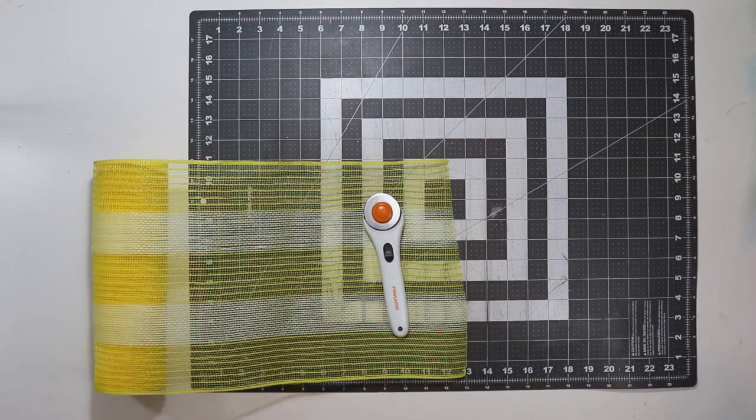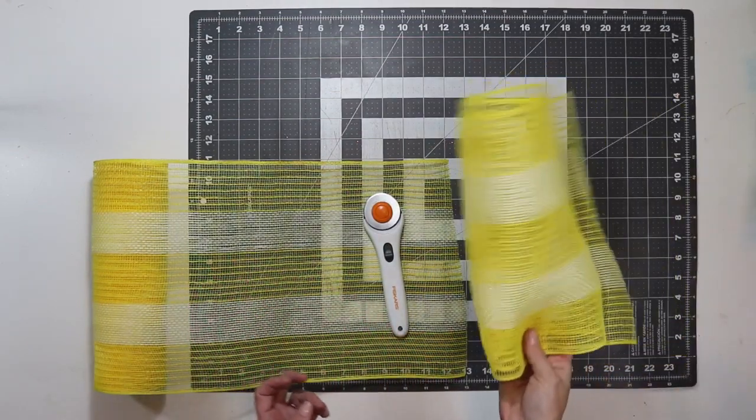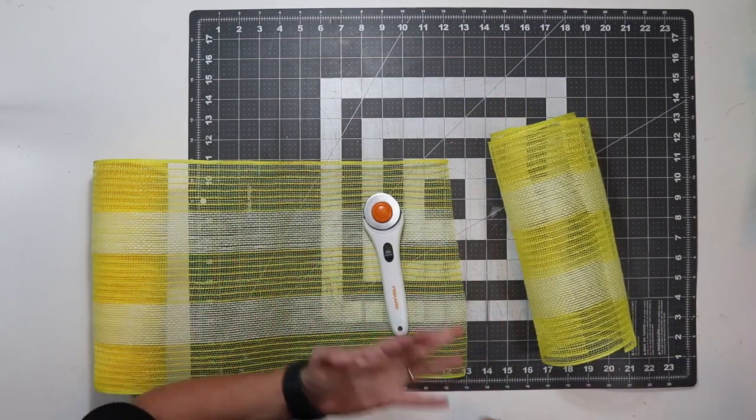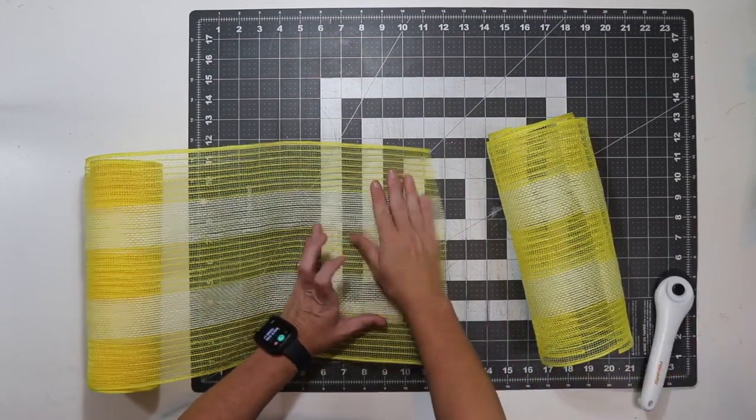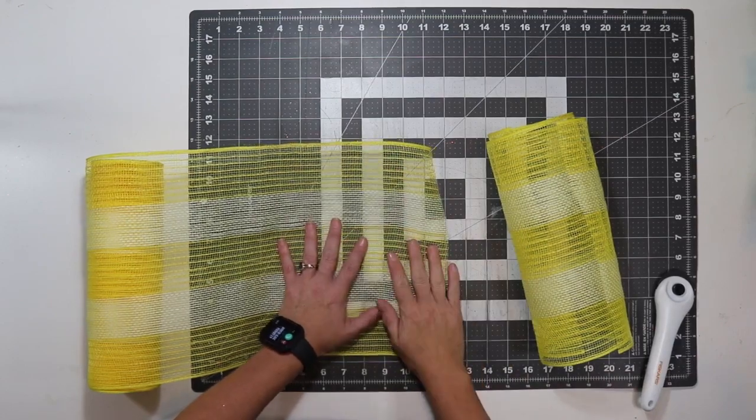So I'm going to cut 14 of these, seven yellow and seven black and white. If you were just doing the black and white in this mesh, you would just need 14 of each.